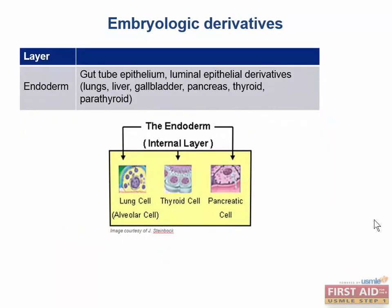Then we have our endoderm — the highest yield thing to remember is that it forms the gut tube epithelium. Don't forget that the brain and spinal cord are NOT derived from endoderm; that's a common mistake — they are neuroectoderm. The anal canal above the pectinate line is endoderm, while below the pectinate line is surface ectoderm. We also have most of the urethra, and the lungs, liver, gallbladder, and pancreas are all derived from endoderm.